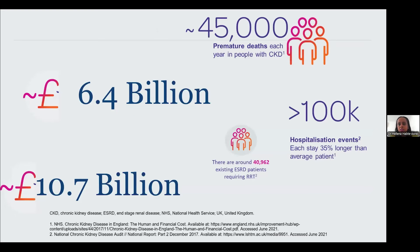The societal burden of diabetic kidney disease is significant and multifaceted. The cost of diabetes in the UK is about £10.7 billion, with approximately 60% spent on treating complications. Similarly, a large proportion of CKD costs goes into dialysis management. Alarmingly, about 45,000 people die prematurely each year in the UK due to chronic kidney disease, and people with CKD tend to have longer hospital stays. Addressing this burden requires a comprehensive approach involving prevention, improving healthcare access, and robust systems to identify, treat, and manage these conditions.